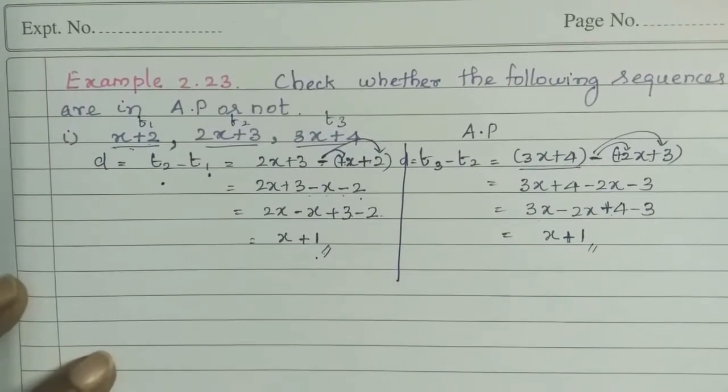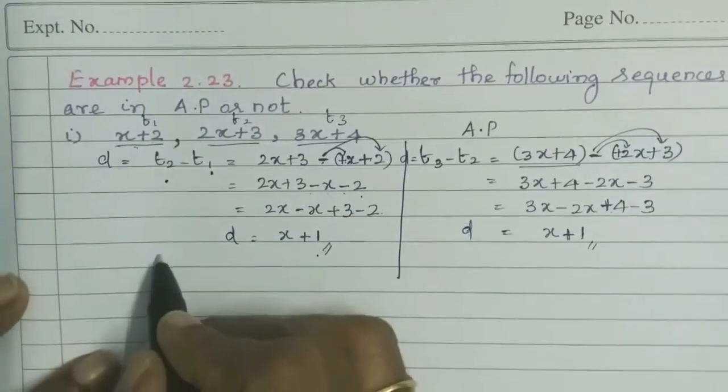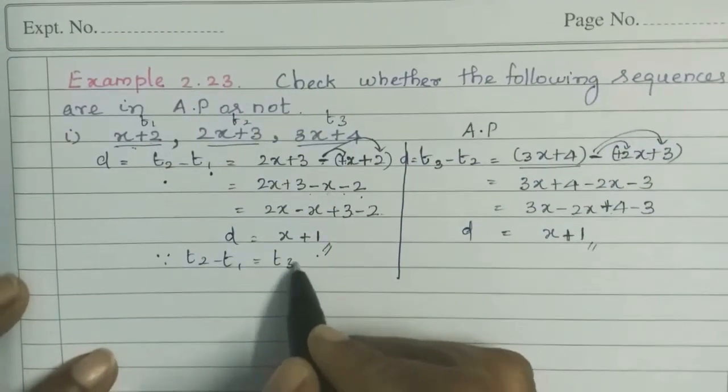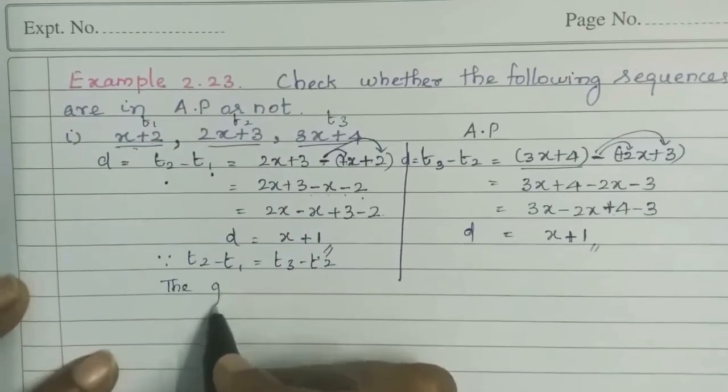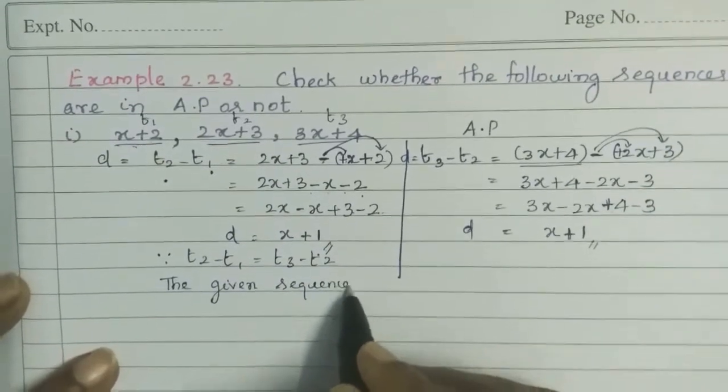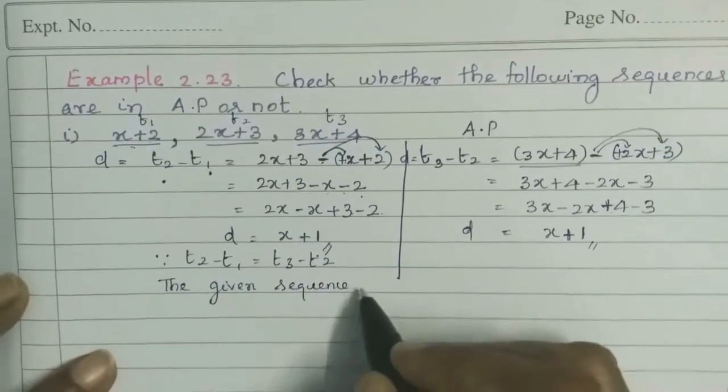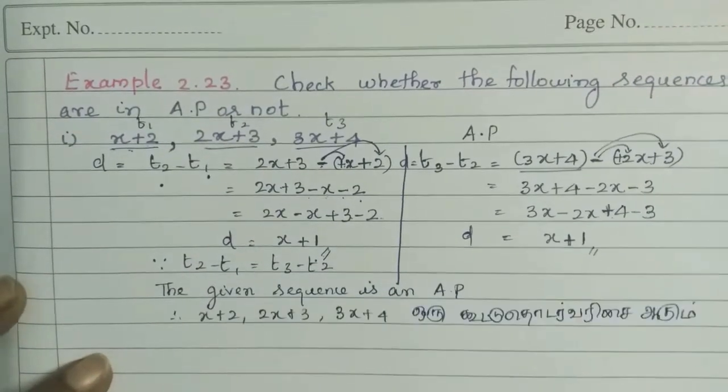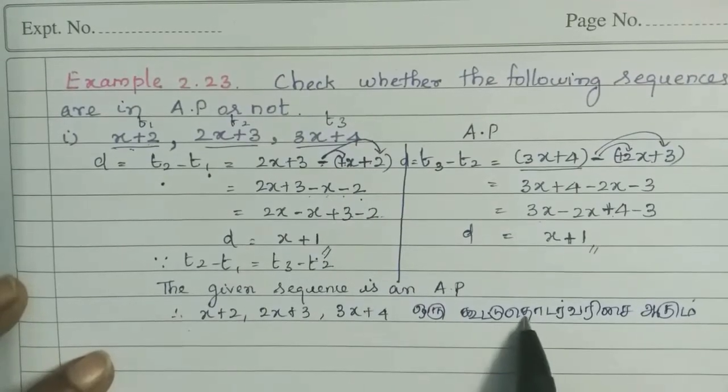Now, here is x plus 1, and here is x plus 1. The common difference is equal. So since T2 minus T1 is equal to T3 minus T2, the given sequence is an AP.